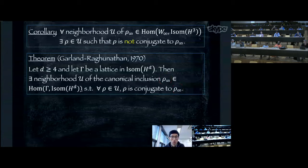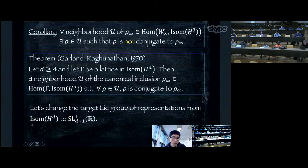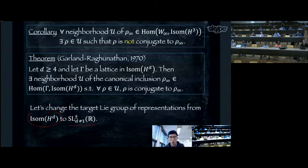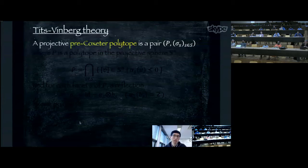Our strategy is to change the target Lie group of the representation from the hyperbolic isometry group to SL±(n+1, ℝ). We are trying to enlarge the hyperbolic geometry to real projective geometry. To do that, we need to understand Tits-Vinberg theory.